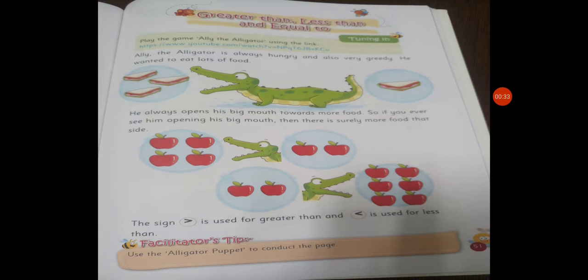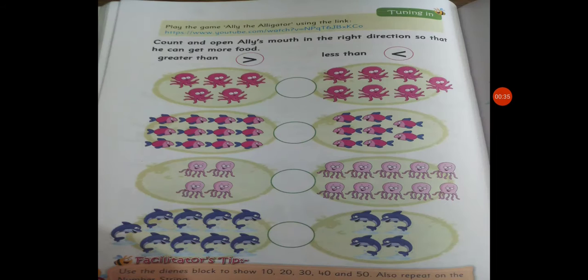So today we will discuss this page. Count and open Ali's mouth in the right direction so he can get more food. Where you can see more food, you can open Ali's mouth in the right direction. Now look at the pictures.